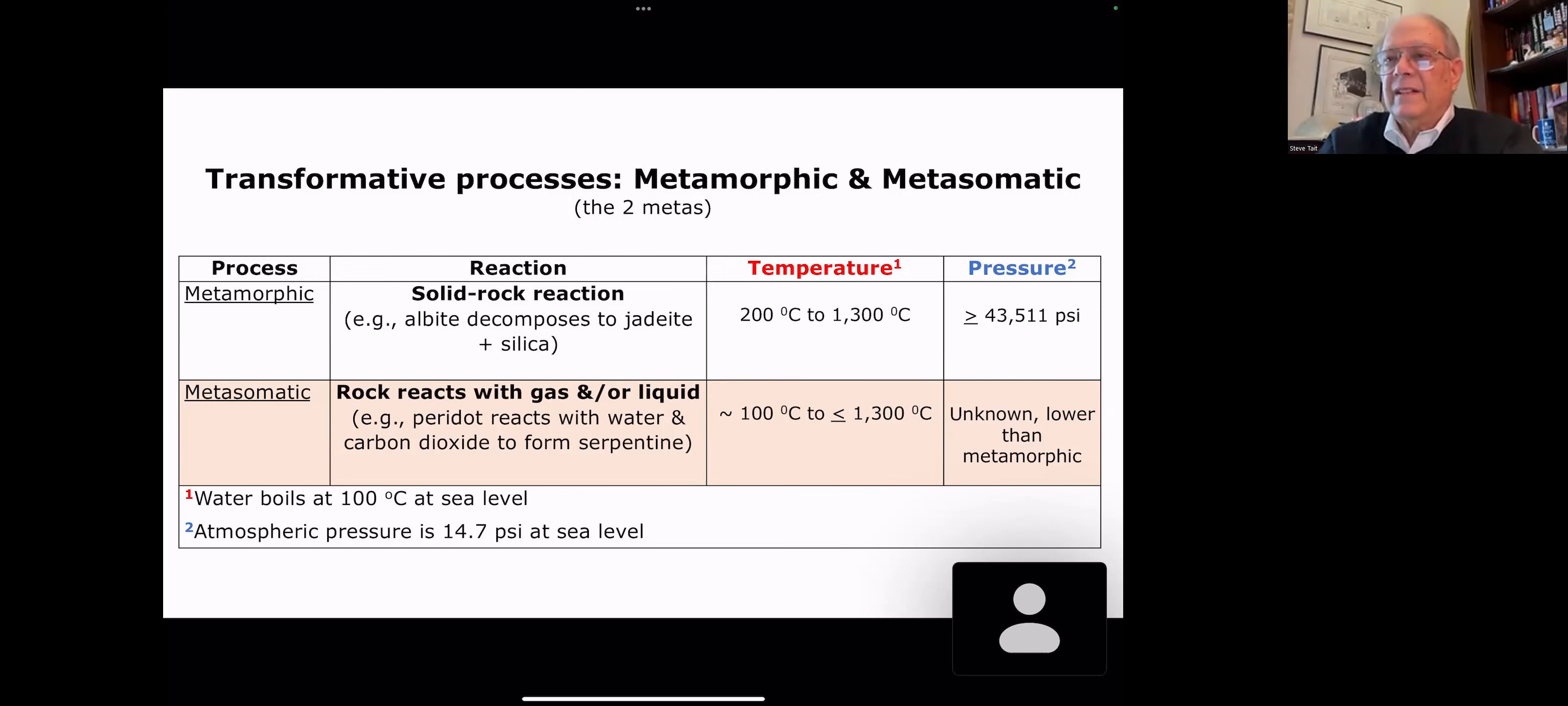Some differences between those two. When you're talking metamorphic, temperatures are in the range of 200 degrees centigrade to 1300 degrees centigrade. This is where most of your rocks and minerals will start to melt. To give you a reference, water boils at 100 degrees centigrade. So this is a very hot process. It also involves some very high pressures, starting around 43,000 PSI. In ultra-high pressure things, you talk about a half a million PSI. Metasomatic processes occur at lower temperatures because now you have gas and liquid to soften things up. They range from around 100 degrees C or less to less than the melting point of the rocks and minerals. It's a new area. We don't really know what the minimum pressure is at this point.